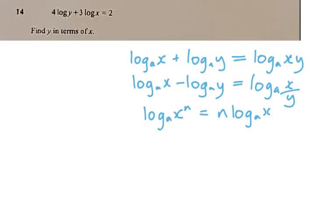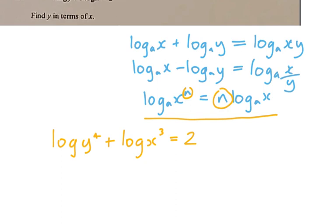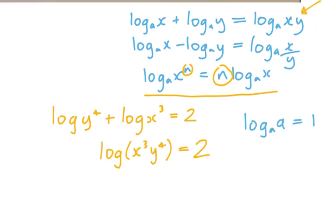This is a logarithms question, so log rules you're going to be using a mix of some of these. First of all, we use this classic where the coefficient here I'm going to move so it becomes a power. So that's the first step. I can now combine them using the top log law here, and then I've got a choice. One way you can solve this is to recall this little trick that log_a base a is equal to 1.